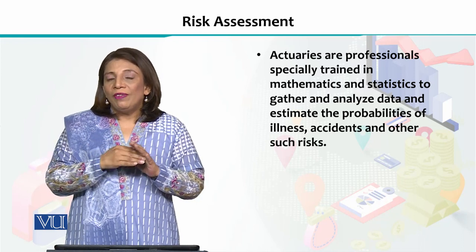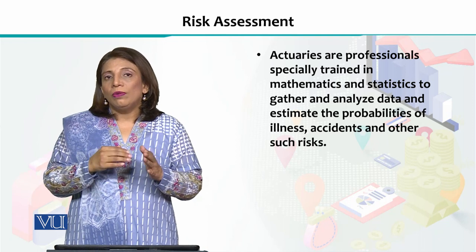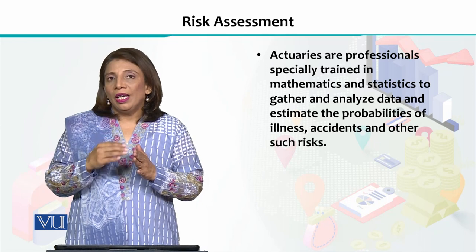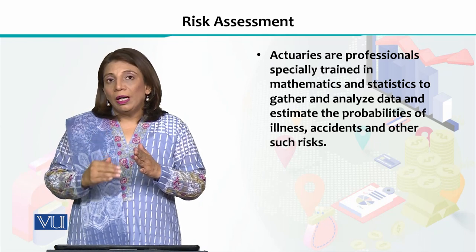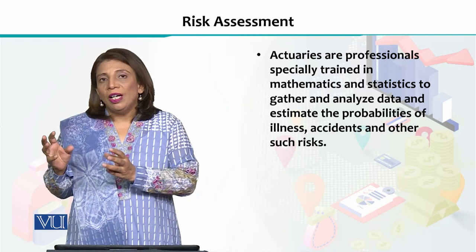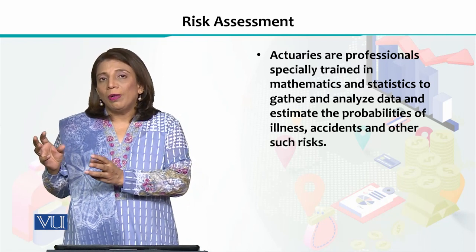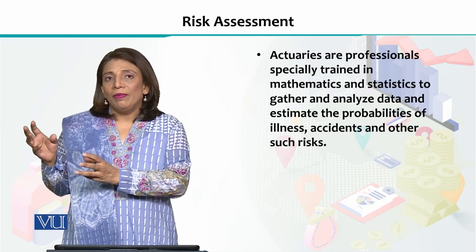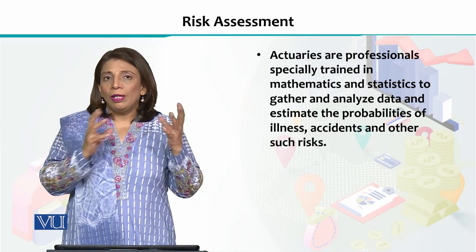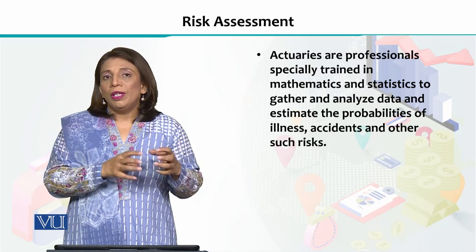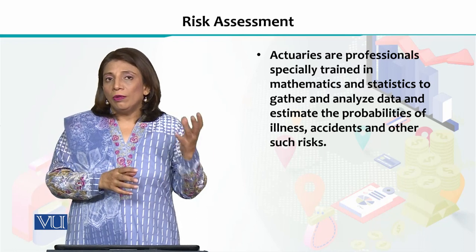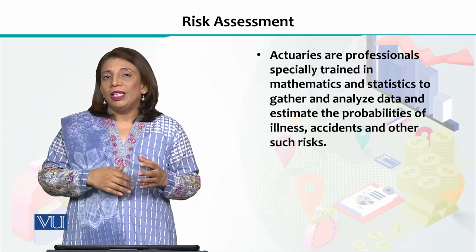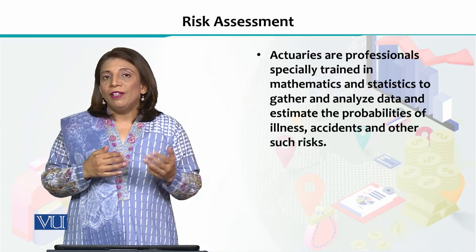Life expectancy varies greatly by region. For example, in the UK, life expectancy is very high, while in Afghanistan it is much lower. So if you have offered insurance policies in Afghanistan, your terms and conditions, premiums, and probabilities — all this data — will be different compared to the package you would offer to people living in England, where life expectancy, probability of disease, and early death rates are all different.